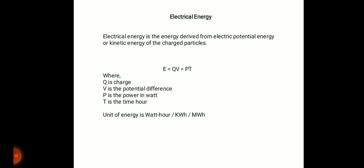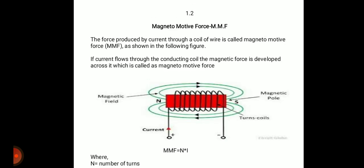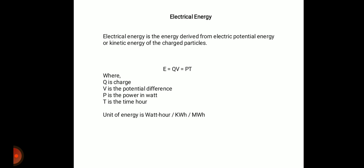Electrical energy: by the universal rule, energy cannot be generated or destroyed — it is simply converted from one form to another. Similarly, electrical energy cannot be generated but can be derived or converted from another form of energy. Electrical energy is energy derived from electrical potential energy or the kinetic energy of charged particles. E is equal to power multiplied by time.